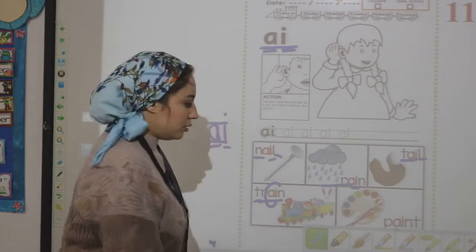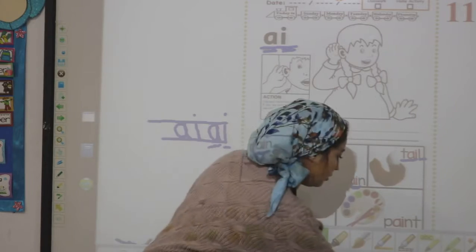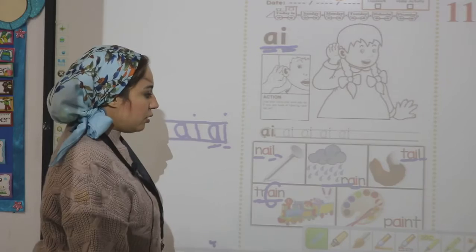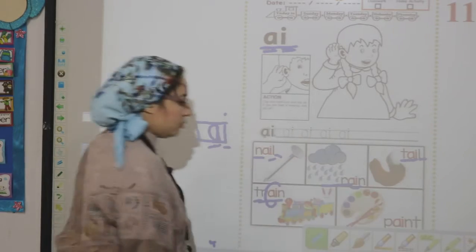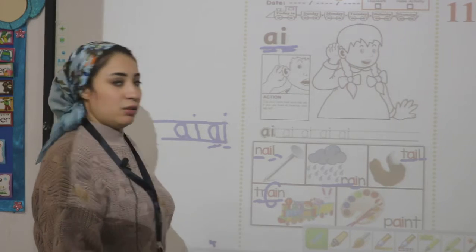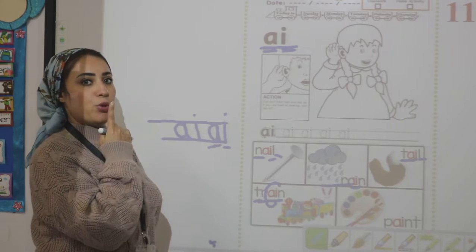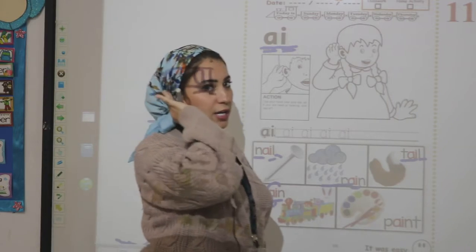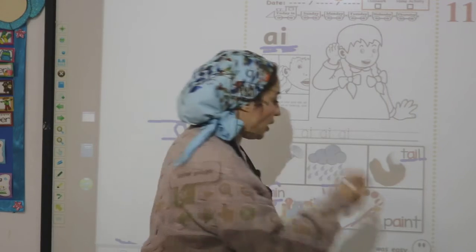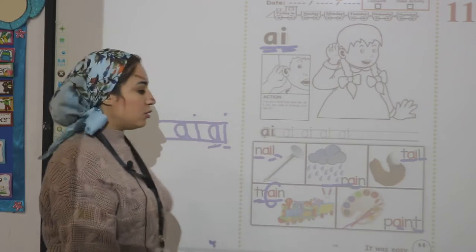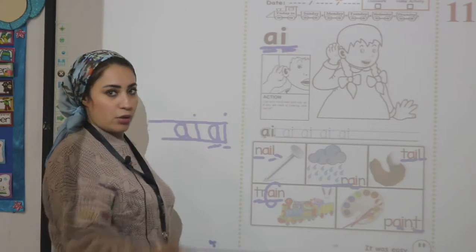Look, what is this picture? Paint. So what is the first sound in the word paint? P. And what is the middle sound? A. What is the last sound? T. Paint.